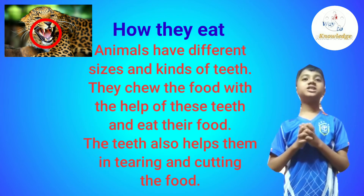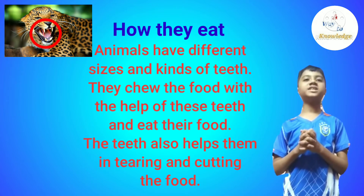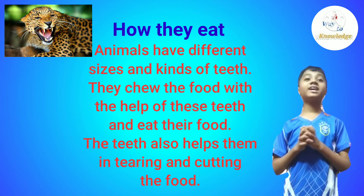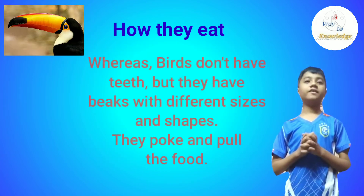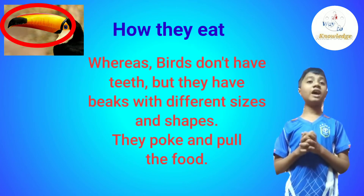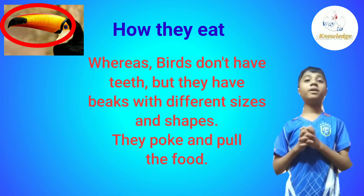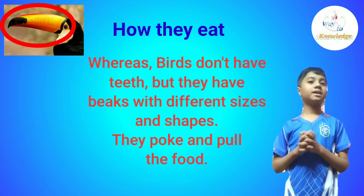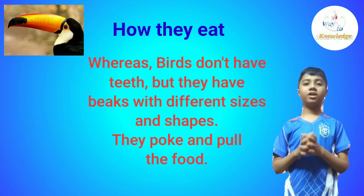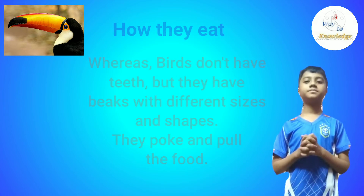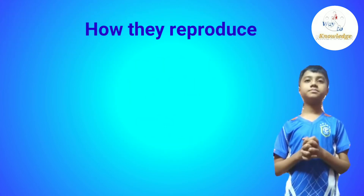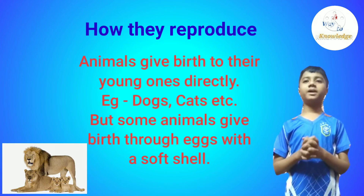Now let's know how they eat. Animals have different sizes and kinds of teeth; they chew, tear, and cut food using these teeth. Whereas birds don't have teeth, but they have beaks with different sizes and shapes, and they poke and pull food with their beak.